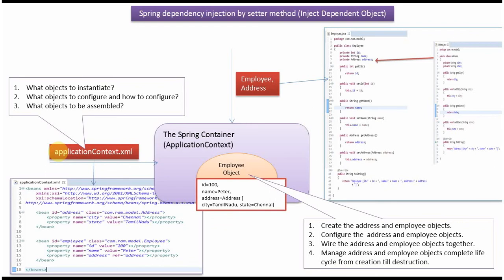The Spring configuration file specifies what objects to instantiate, what objects to configure, how to configure them, and what objects to be assembled. The Spring container reads this configuration file, creates the Address object and Employee object, configures both, wires the Address object with the Employee object, and manages the complete lifecycle of both objects.